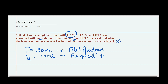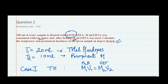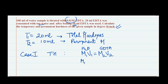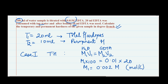Let us quickly use Case 1 for total hardness. We use M1V1 = M2V2, where M1V1 is for water and M2V2 is for EDTA. M1 is the molarity we need to find, V1 is 100 ml (the water volume). M2 is the molarity of EDTA which is 0.01 molar, and V2 is the titration reading of 20 ml. Solving this gives M1 = 0.002 moles per liter.